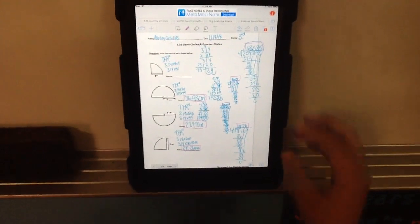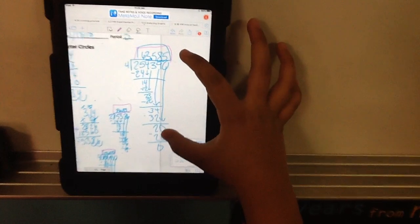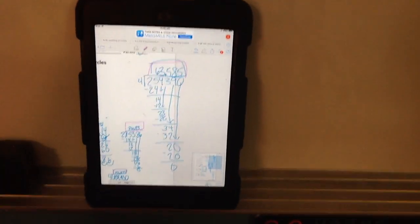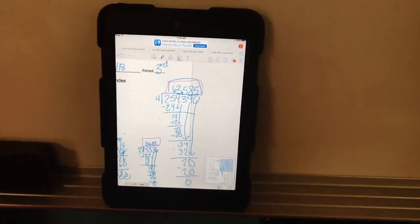We were doing areas, semi-circles and quarter circles, and I did my work too big, so I'm going to lasso it so it can fit in.